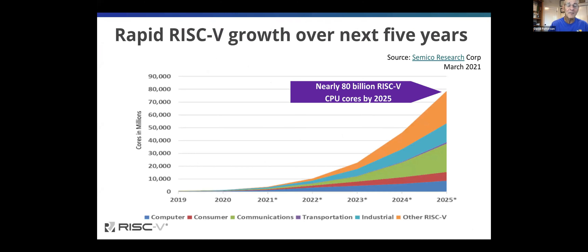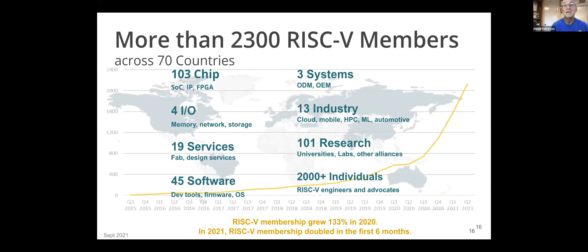One research firm has projected 80 billion RISC-V cores by 2025 — up from their earlier projection of 60 billion, so they think it's growing faster. As for participation in RISC-V International, that's another indication of interest: 2,300 members of various kinds across 70 countries, more than 100 chip companies, 45 software companies, more than 100 research labs, and 2,000 individuals. It more than doubled in 2020, and then in the first half of 2021 it more than doubled again. There's a lot of enthusiasm around it.